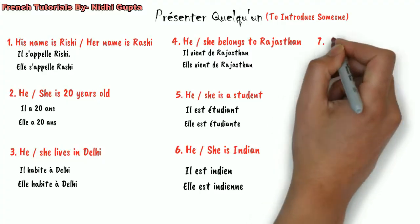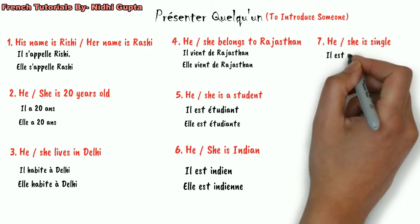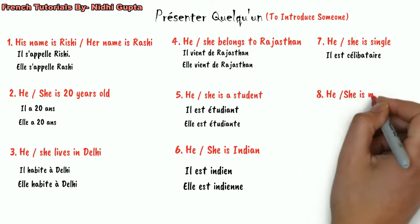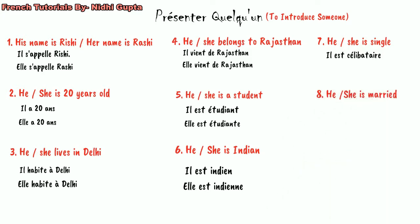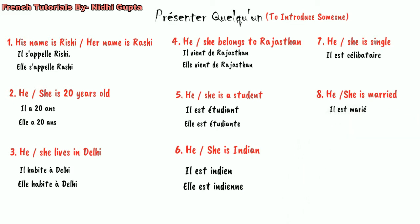Next we can talk about marital status — if he is married or single. If Rishi is not married and is still single, we say 'il est célibataire.' And if he is married, we say 'il est marié.'